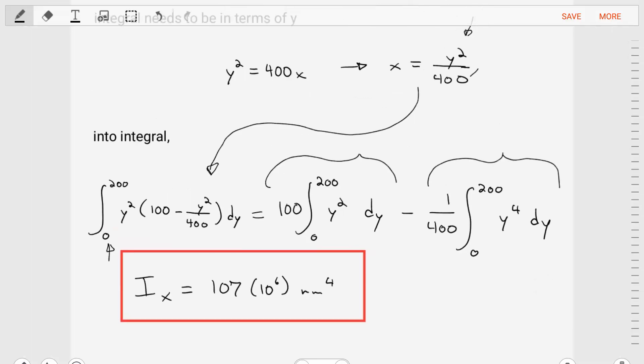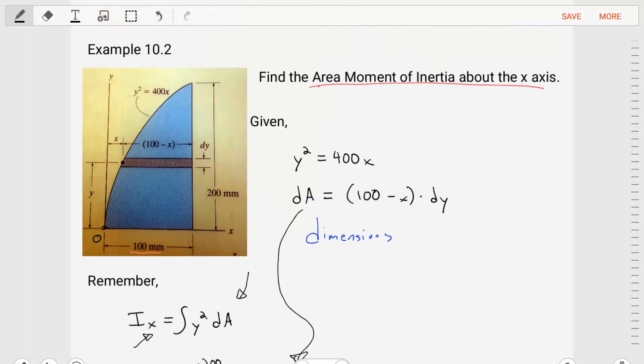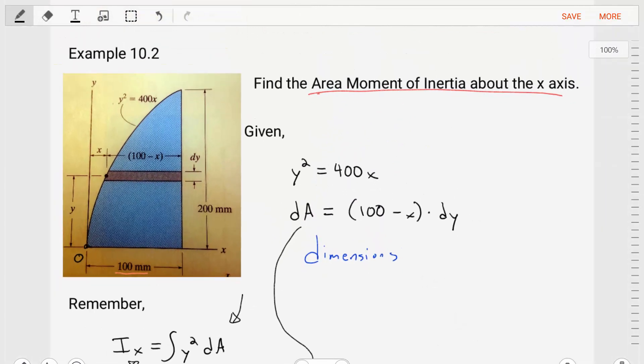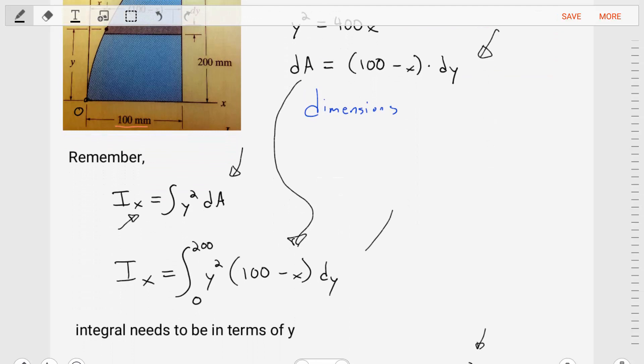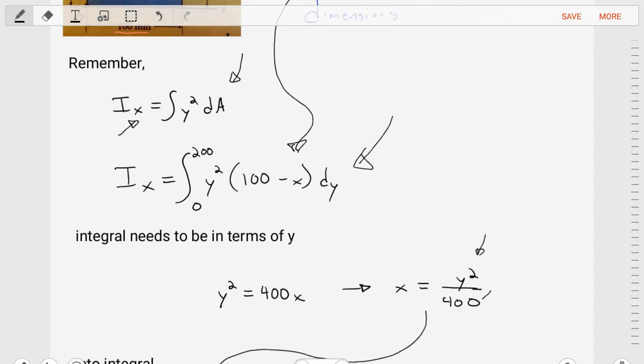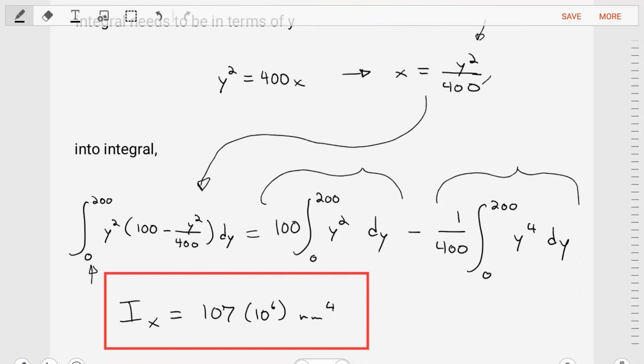So we've solved this problem. Starting from the top, the whole process, the real challenge in finding the area moment of inertia is defining what dA is, getting our integral all in terms of one variable, either x or y, and then performing the integration.